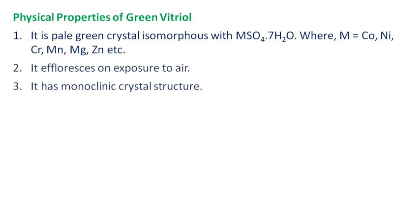Physical Properties of Green Vitriol: It is a pale green crystal, isomorphous with MSO₄·7H₂O, where M represents metals like cobalt, nickel, chromium, manganese, magnesium, zinc, etc. It effloresces on exposure to air and has a monoclinic crystal structure.